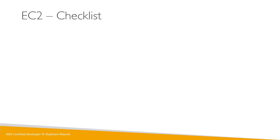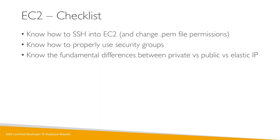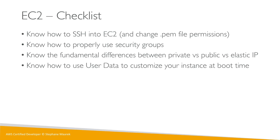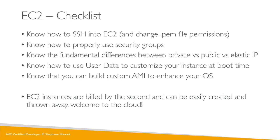For the exam, here's a quick checklist of what you really need to know: how to SSH into EC2 and change PEM file permissions; how to properly use security groups (opening the right ports, locking down to the right IPs or security groups); the fundamental difference between private, public, and elastic IPs; how to use user data to customize an instance at boot time; and that you can build custom AMIs to enhance your OS. EC2 instances are billed by the second and can be easily created and terminated — welcome to the cloud.